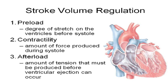Preload is basically how much the ventricles are stretched before they contract. Just like with skeletal muscle cells, we said there was an optimum level of stretching, an optimum amount of overlap. The same thing applies to the heart — if you stretch it the right amount, up to a point, you get that optimal level of overlap, and you're going to get more force produced.